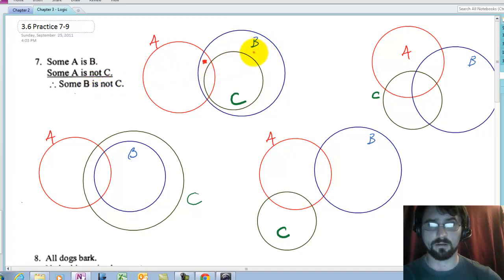Now, let's see. Some B is not C. Well, looking at this picture, it looks valid, but then you have to ask yourself, is there another way of drawing the picture? And actually, there is.